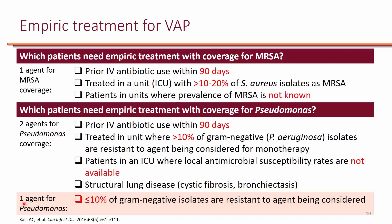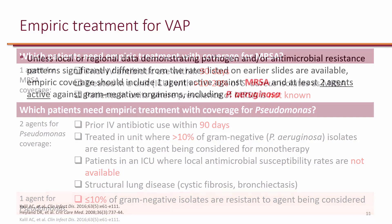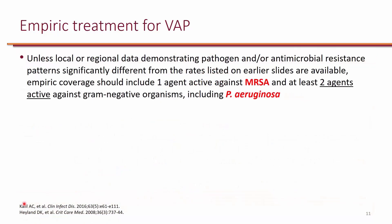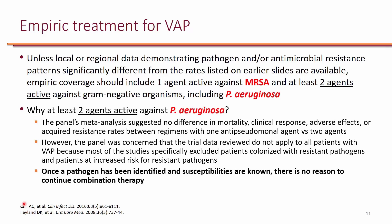Most anti-pseudomonal antibiotics, with the exception of delafloxacin, do not cover MRSA. So when we use two agents active against Pseudomonas, we typically end up adding a third agent for MRSA coverage — typically vancomycin. The guideline recommends two agents active against Pseudomonas for empiric therapy so that if one agent doesn't cover the Pseudomonas, the other should. This applies to patients at risk of having multi-drug resistant Pseudomonas.